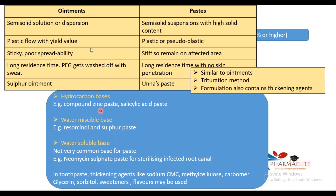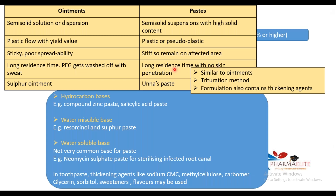Sulfur ointment is an example of ointment; oona paste is an example of paste. Don't forget these examples — that's more important from an entrance exam point of view. Sulfur ointment for ointments, oona paste for paste. Plastic or pseudo-plastic is the flow of your paste. Method of manufacturing is the same; the only difference is your paste will also have a thickening agent. Thickening agents include sodium CMC, methyl cellulose, and carbomer.